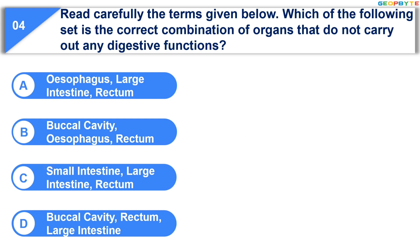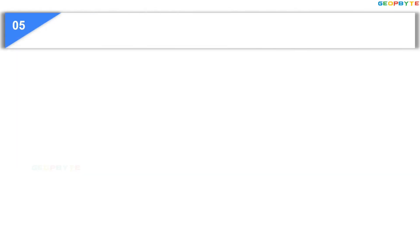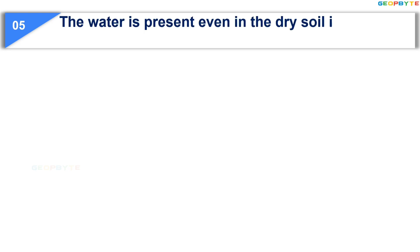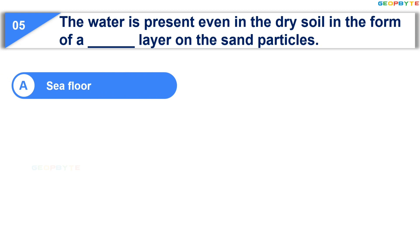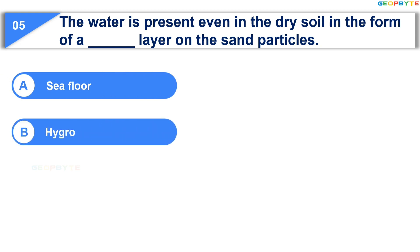Your time is up and the correct answer is Option A: esophagus, large intestine, rectum. The fifth question is: water is present even in dry soil in the form of a dash layer on the sand particles. Option A: sea floor; Option B: hygroscopic.